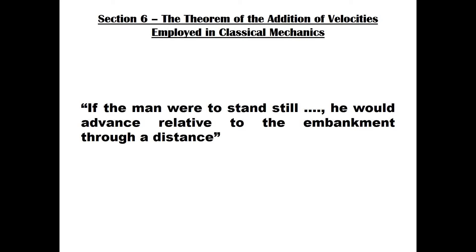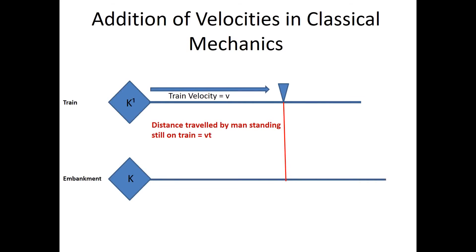Einstein asks us to confirm this result by looking at it from another perspective — that of the distance covered by the man relative to the embankment. First, he asks us to consider the case where the man stands still on the train. If the man were to stand still, he would advance relative to the embankment through a distance equal to the velocity of the train V multiplied by the amount of time T that the train has travelled at that velocity. This gives us the distance equal to VT.